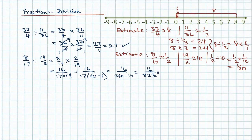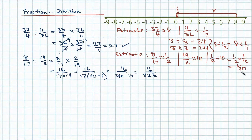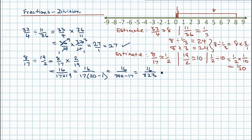I can't see any way of simplifying it — I go through my divisibility checks and can't find any common factor. So I think that's the answer: 16 over 323. Let me just check: it should be roughly equivalent to a 20th. If I multiply 16 by 20, I get 320, and 320 is very close to 323. So I'm confident about my answer.